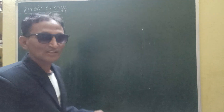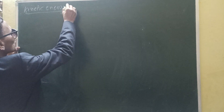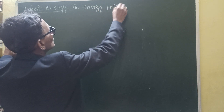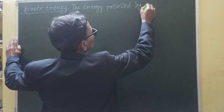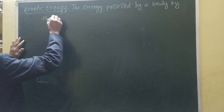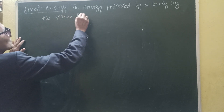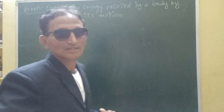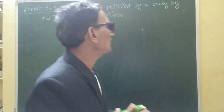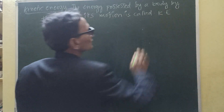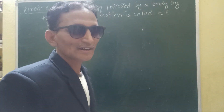Let us discuss about Kinetic Energy. The units of kinetic energy are the same as that of work. The energy possessed by a body by the virtue of its motion — virtue means state — by the state of its motion, it is called kinetic energy. You know the formula for kinetic energy: half mv². Let us prove kinetic energy.